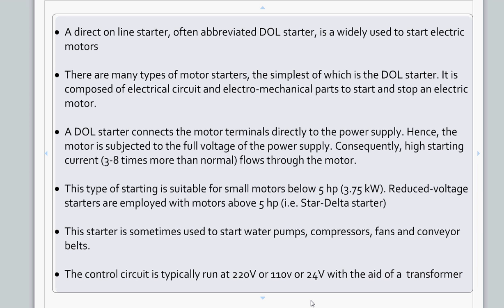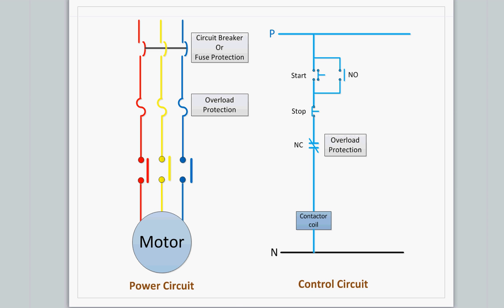This shows the power and control circuit of the DOL starter. Basically, it gets three-phase power, and a circuit breaker or fuse can be used for protection in case of motor failure or short circuit. Then there is overload protection here, and these are the contacts of the contactor. As said earlier, all three-phase voltages apply to the motor directly.